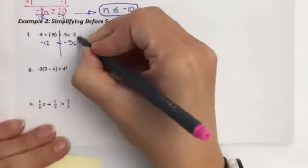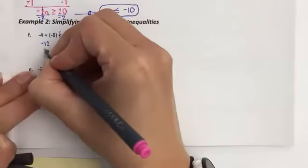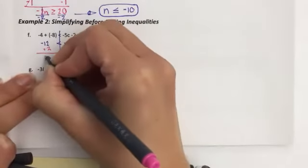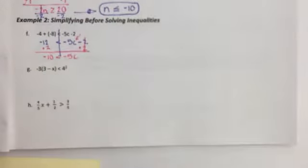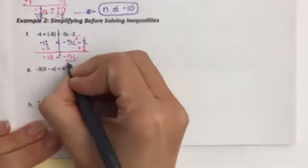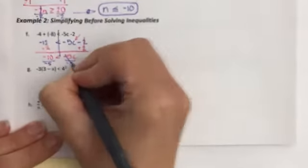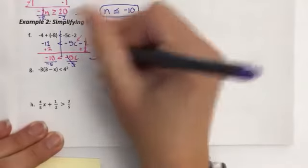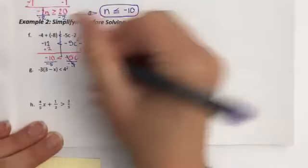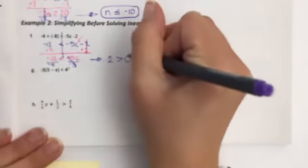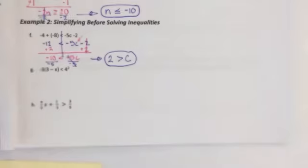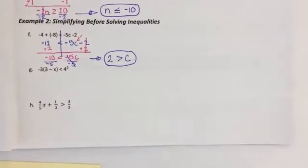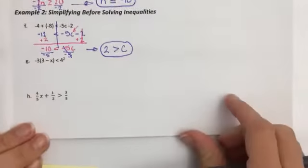Then I solve it. I'm going to get the C by itself. I have to add the 2 first. I get a negative 10 is less than negative 5C. Divide by a negative 5. I need to flip my symbol. Negative divided by negative is a positive 2. I like to keep the variable. If the variable starts on the left, I keep it on the left. If it starts on the right, I keep it on the right. That's one thing that helps me make sure I don't have my symbol or my inequality in the wrong spot.